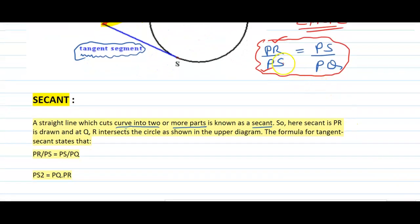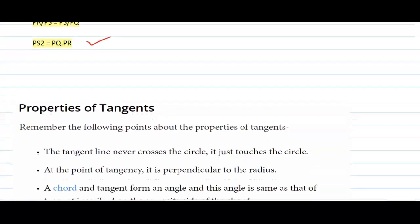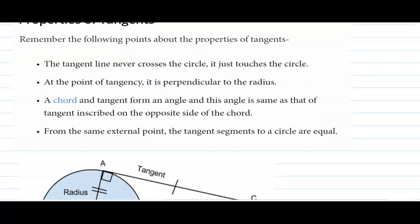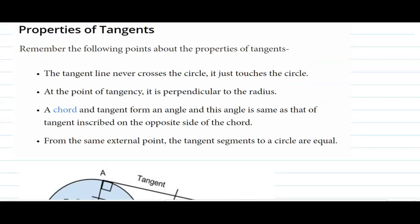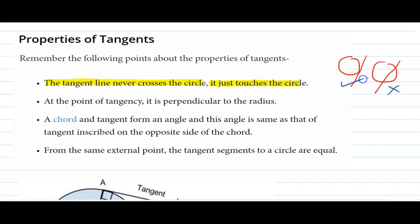Now, one more thing — properties of tangent. This is a recap of what we did in the last lesson. The tangent line never crosses the circle; it just touches the circle. Remember, this is our tangent — it always touches the circle.